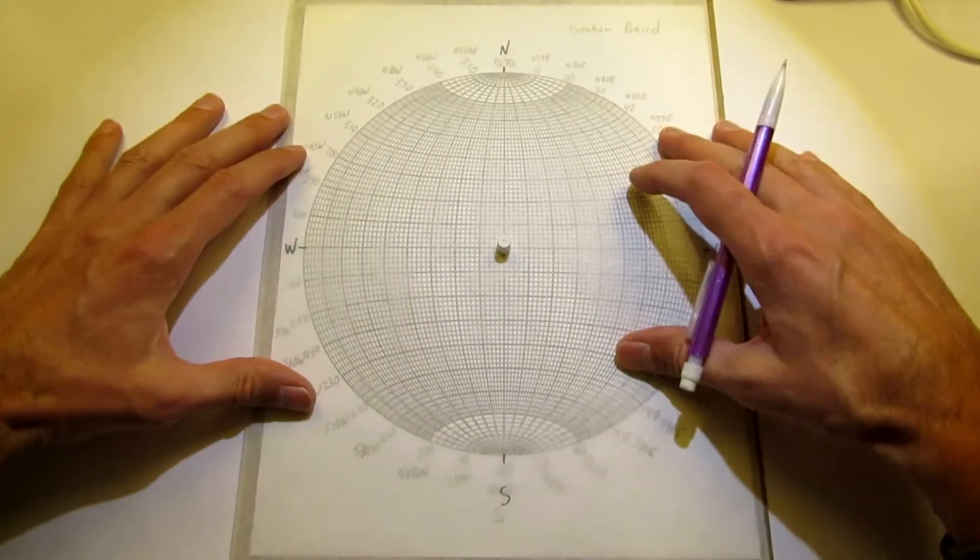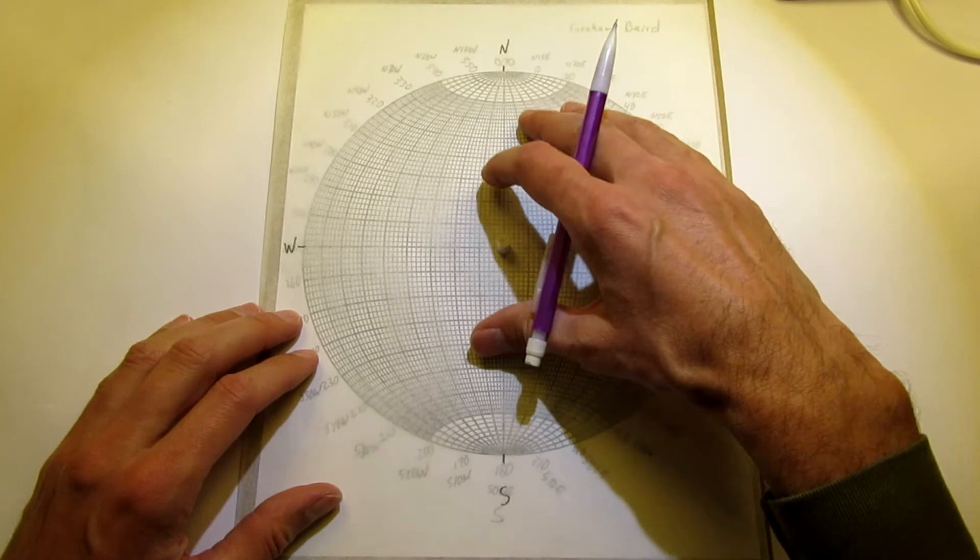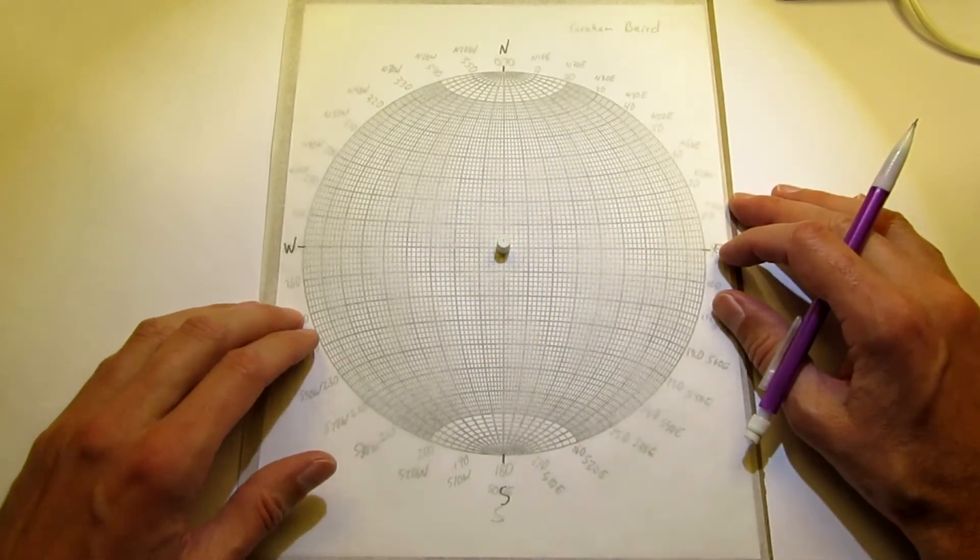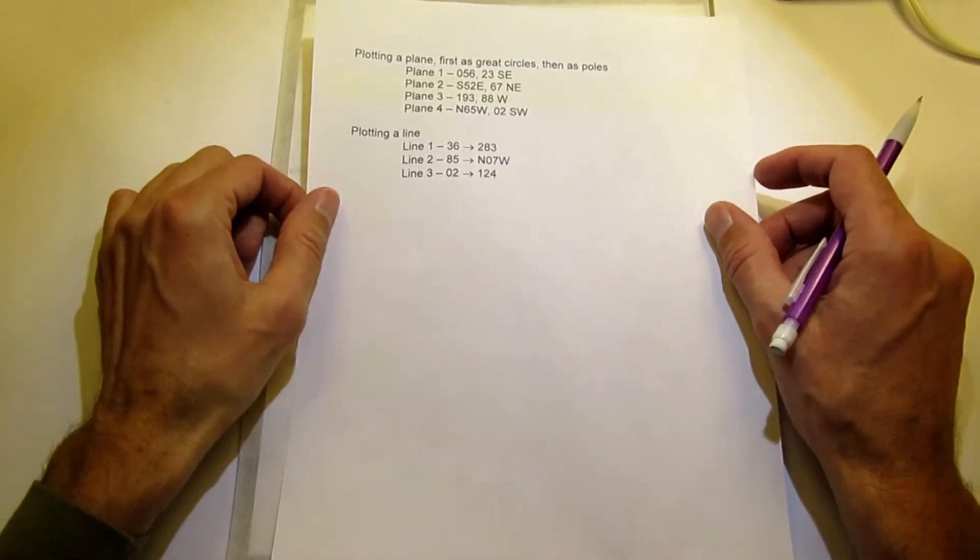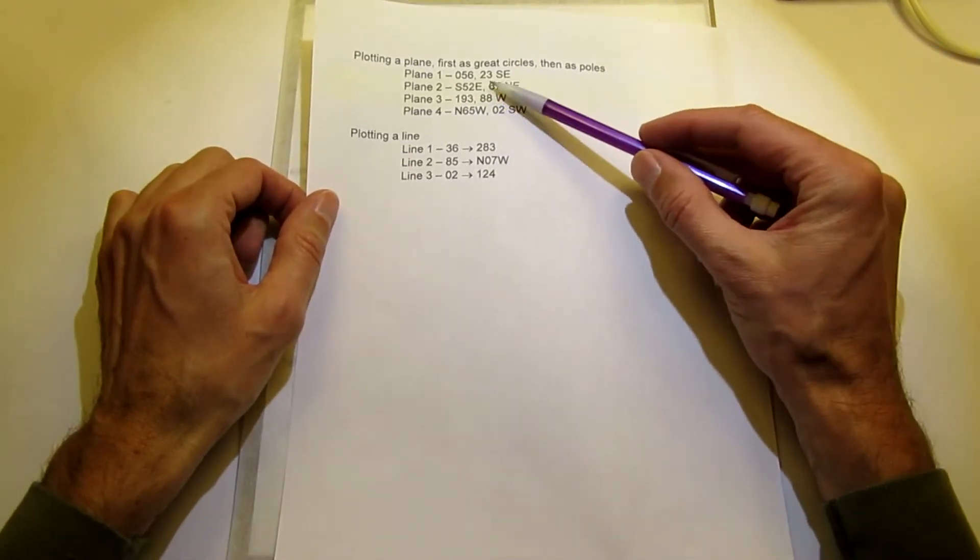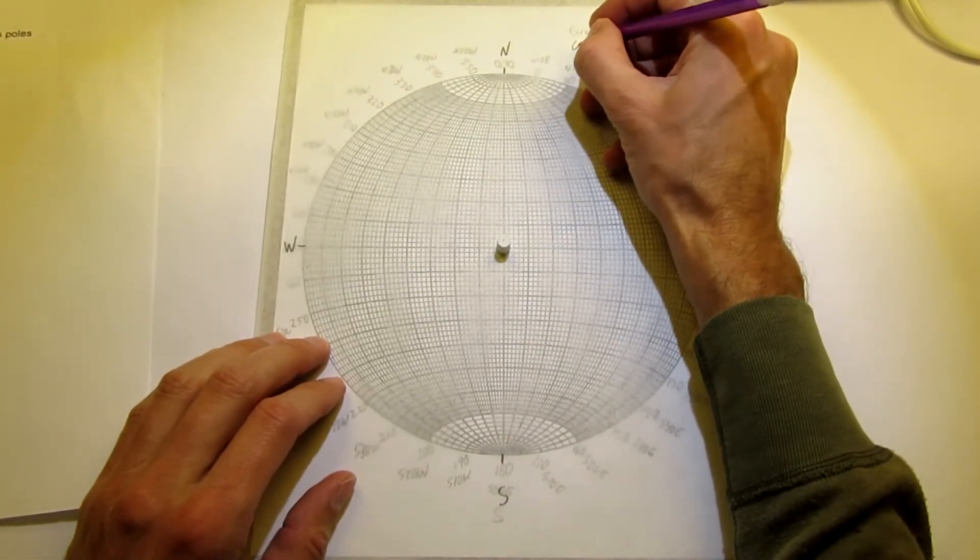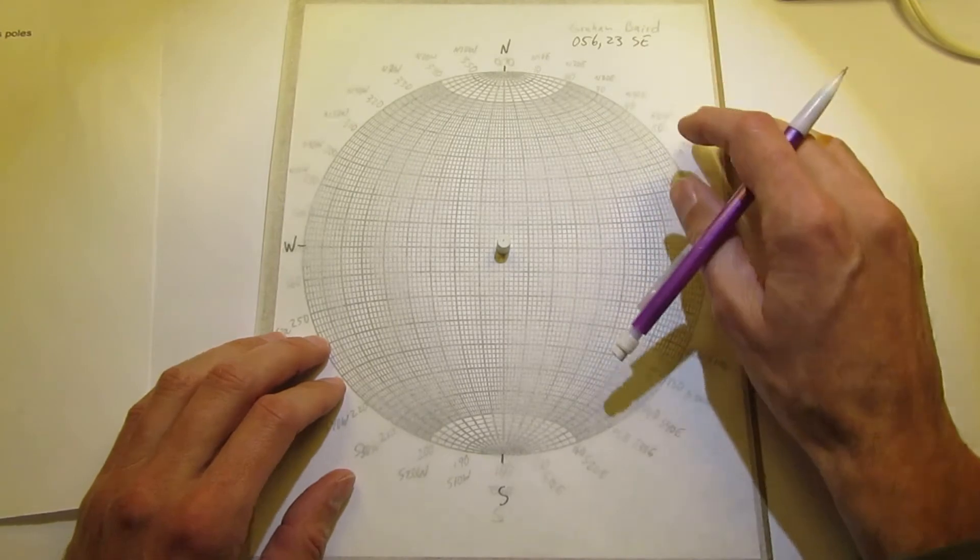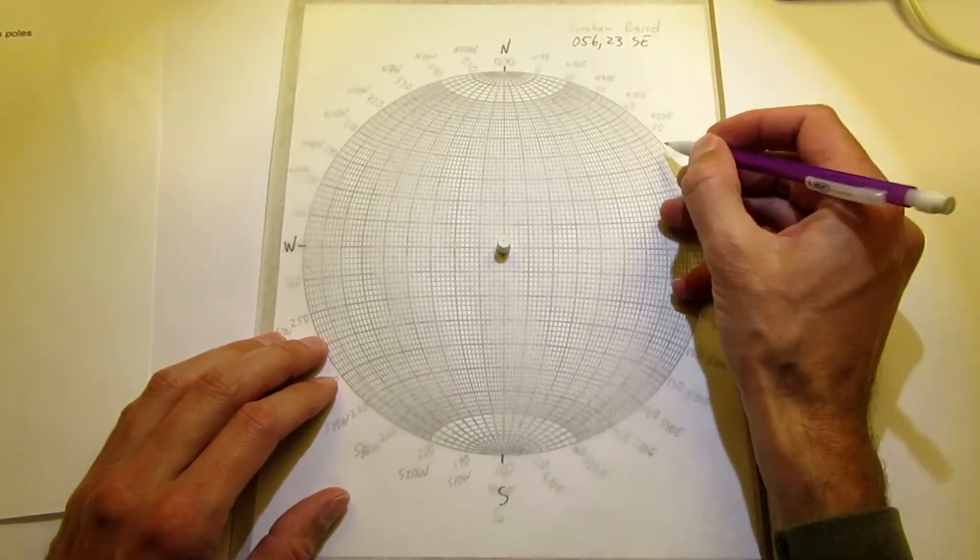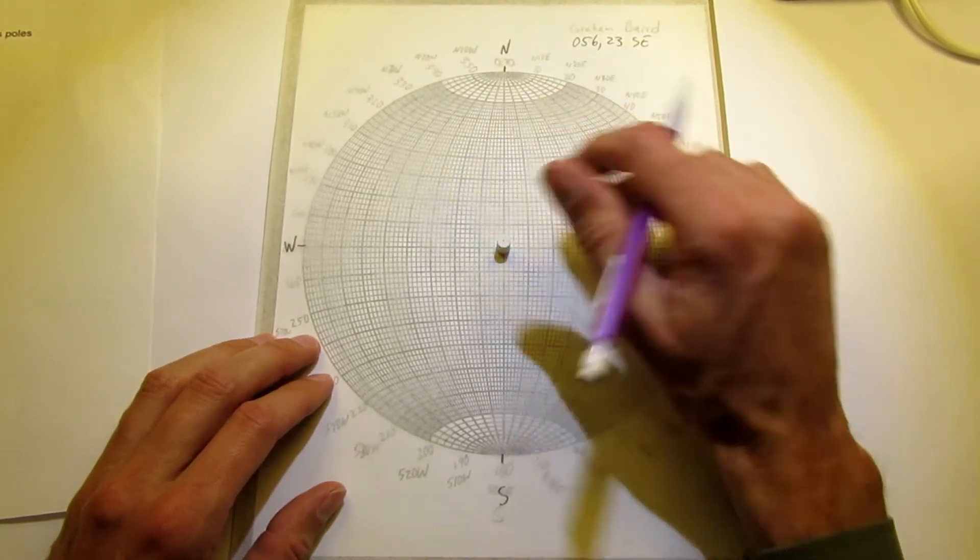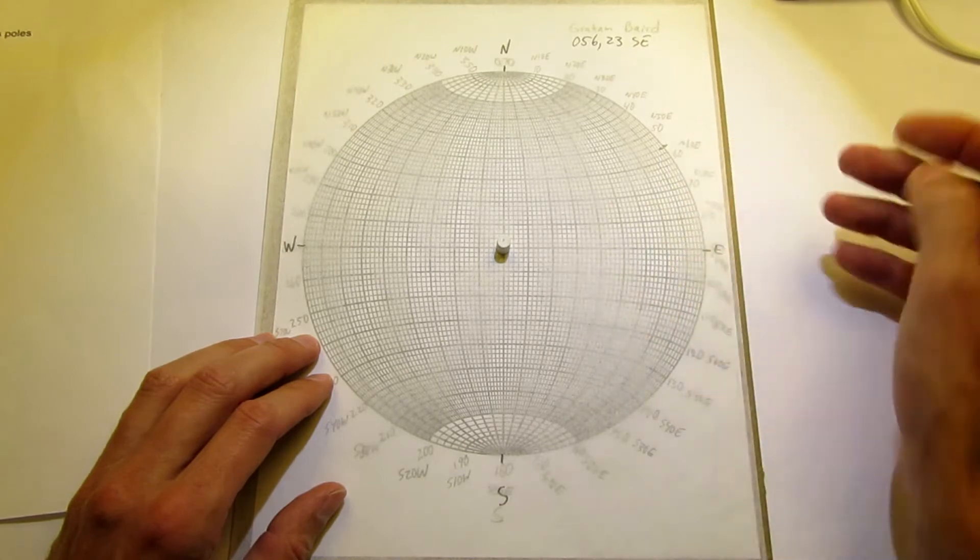Okay, so here's our home position. And we will return to this at the end of plotting every single circle or line. 056-23 is our first plane. We know that follows right-hand rule just by inspection. So the first thing I'm going to do is mark the strike on the outside of the stereonet. 056 is there.